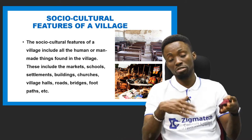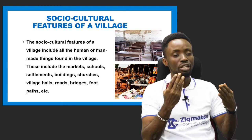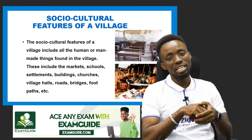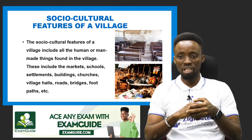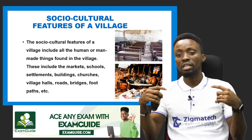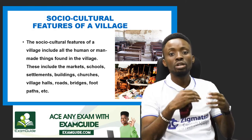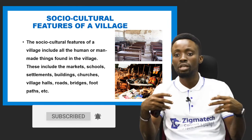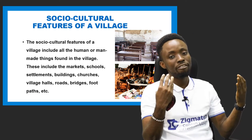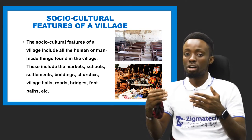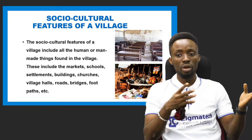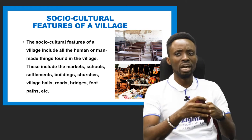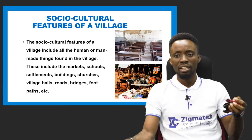Now let's look at the social or cultural — that is, the human or man-made features — you can see in a village. When you go to a village, the first thing you can see is a village market. You also see schools, less developed settlements and buildings, churches, a village hall, roads, bridges, footpaths, and lots of other man-made structures.